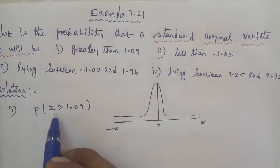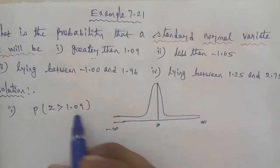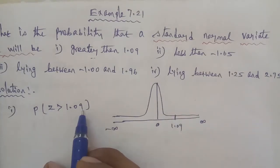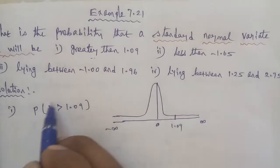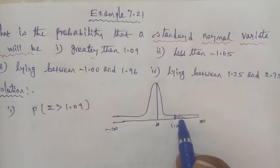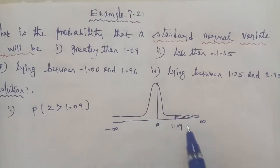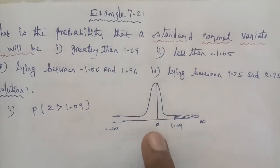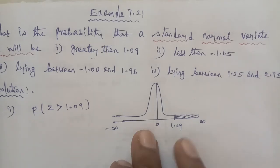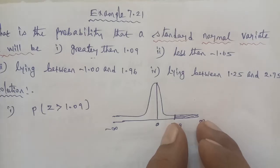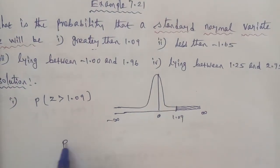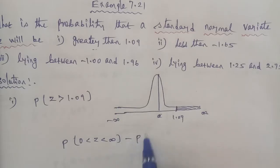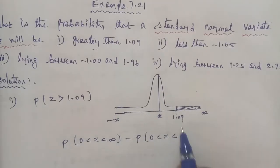The given question asks: is Z greater than 1.09? Since 1.09 is a positive value, for the condition Z greater than 1.09, we compare the Z value. Therefore, P(Z > 1.09) equals P(0 < Z < infinity) minus P(0 < Z < 1.09).